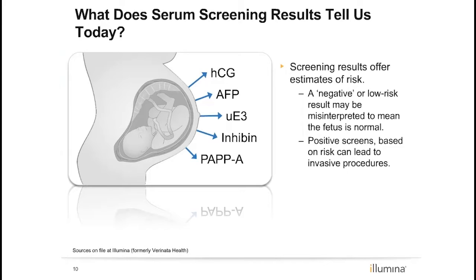A positive test result means that the risk for the fetus to have that condition is at or above a chosen cutoff level. For example, if the screening cutoff is 1 in 250 and a patient's risk is greater than 1 in 250, her result is labeled as positive. A positive result is often misinterpreted to mean the fetus is affected. A negative or low-risk result means the patient's risk is below that chosen cutoff, and this too is often misinterpreted to mean the fetus is normal or unaffected.